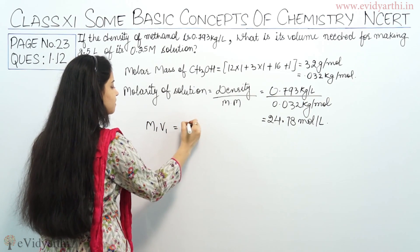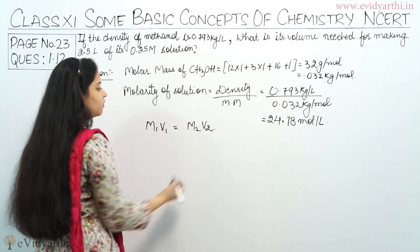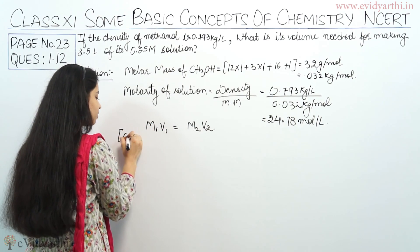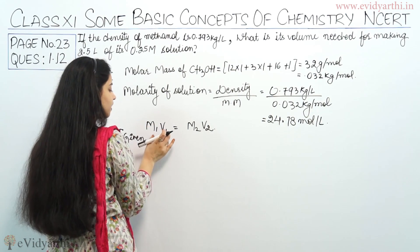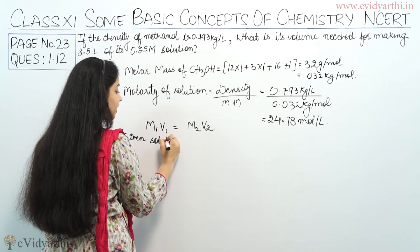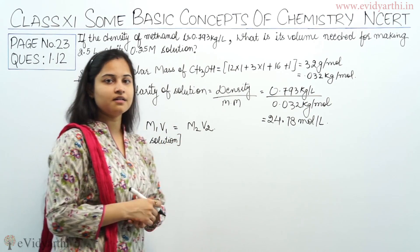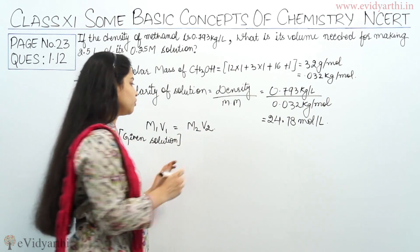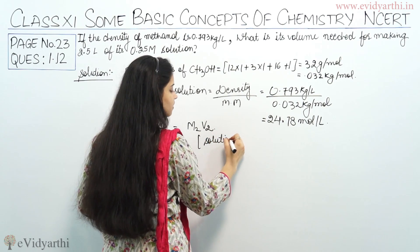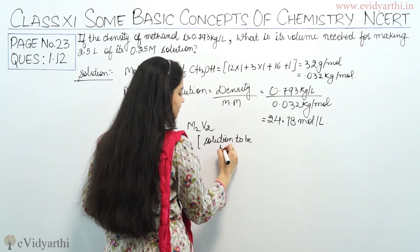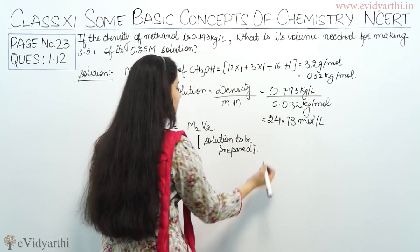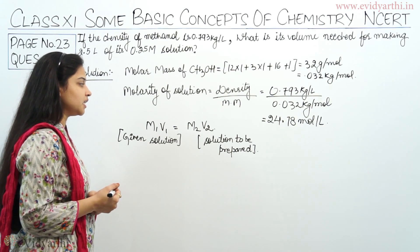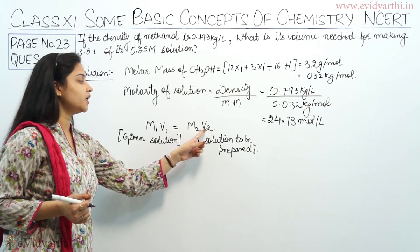Now we apply the equation M1V1 = M2V2. M1V1 represents the given solution — the initial amount — and M2V2 represents the solution to be prepared. We need to calculate V1, which is the initial volume needed to prepare V2 amount of solution.